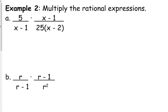So let's look at how to do this. First of all, we need to factor, if possible. Well, this first example, there's no factoring that needs to be done. 5 doesn't need to be factored, x minus 1 can't be factored, 25 times x minus 2 is already in factored form. So we don't have to do any factoring here.